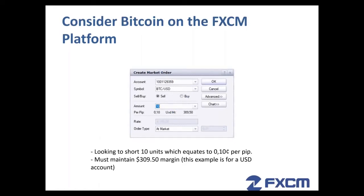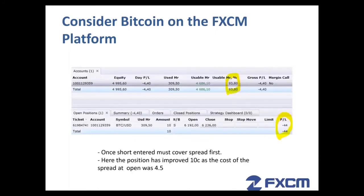As an example, consider Bitcoin on the FXCM platform. We're looking to short 10 units, which equates to 10 US cents per pip. In order to take on this position, the trader must maintain a $309.50 margin — this is an example for a US dollar account. Once the short has been entered, the trader will need to cover the spread first. The position has improved 10 cents, as the cost of the spread at open was 4.5.